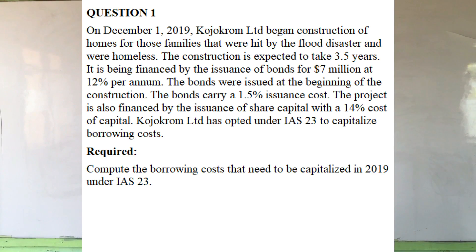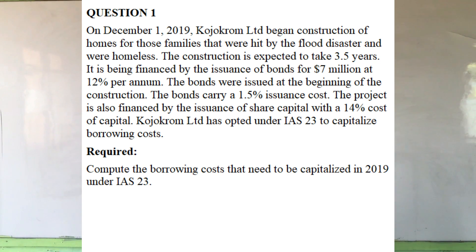On December 1, 2019, Kojo Krum Limited began construction of homes for families that were hit by the flood disaster and were homeless. The construction is expected to take 3.5 years. It is being financed by issuance of bonds for $7 million at 12% per annum. The bonds were issued at the beginning of the construction and carry a 1.5% issuance cost. The project is also financed by issuance of share capital with a 14% cost of capital. Kojo Krum Limited has opted under IAS 23 to capitalize borrowing costs. Compute the borrowing costs that need to be capitalized in 2019 under IAS 23.